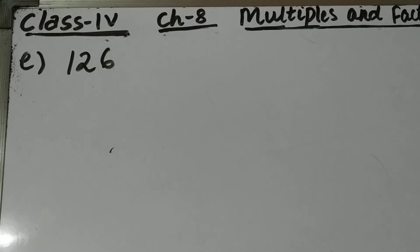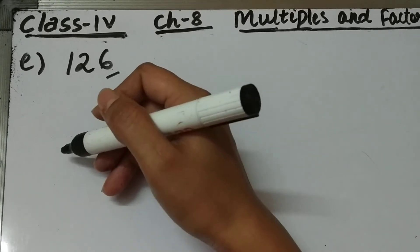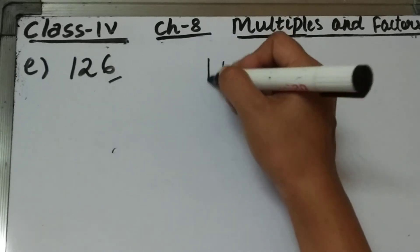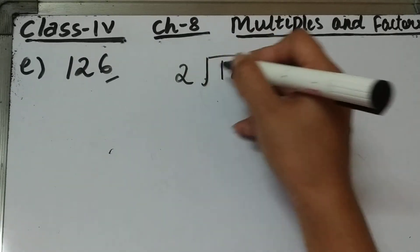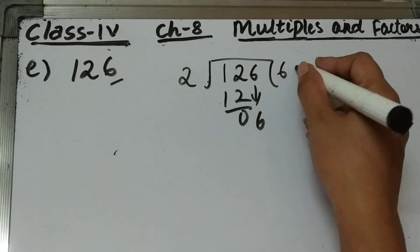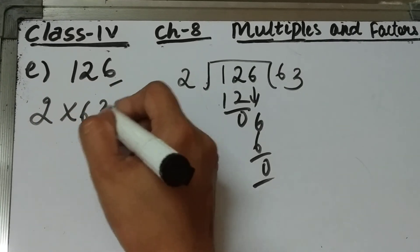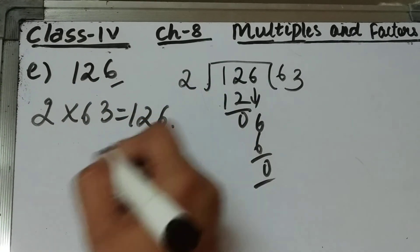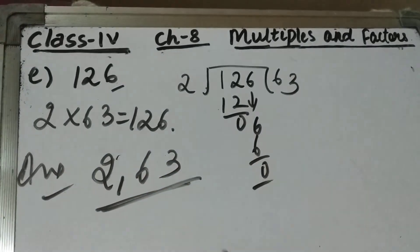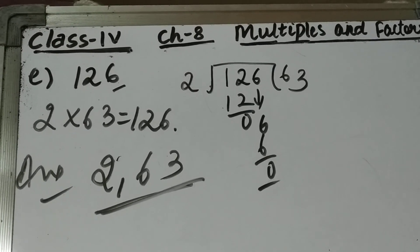Part E is 126. The 1's place is 6, so this is an even number and 126 is divisible by 2. 2 sixes are 12, remainder 0, bring this 6 down, 2 threes are 6. So 2 times 63 is 126. The 2 factors of 126 are 2 and 63. This is question number 4 of exercise 8B.